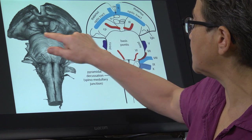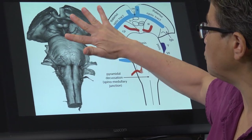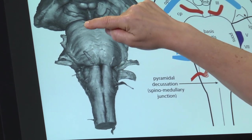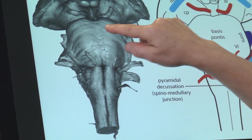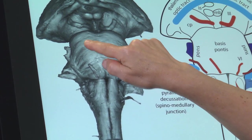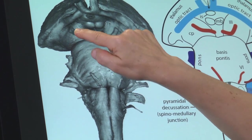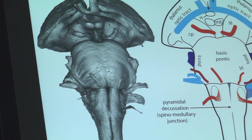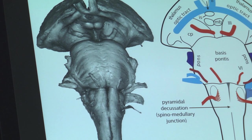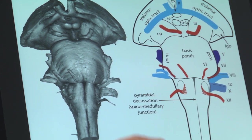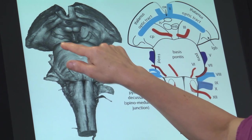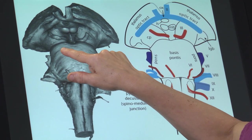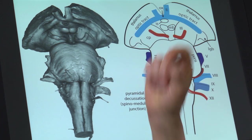Once we get into the pons, we have smooth sailing. The corticospinal tract is going to go shooting through the base of the pons. Then it's going to enter, in the midbrain, the middle part of these cerebral peduncles. These cerebral peduncles are where a bunch of tracts are concentrated, and in the middle third of the cerebral peduncles are the corticospinal tract and the corticobulbar tract.